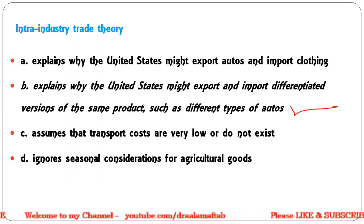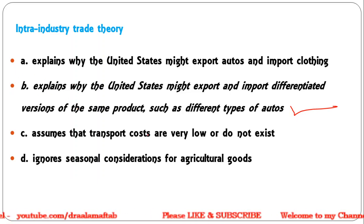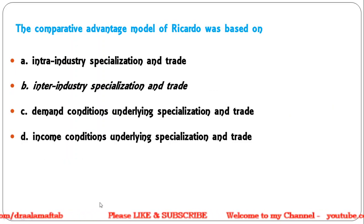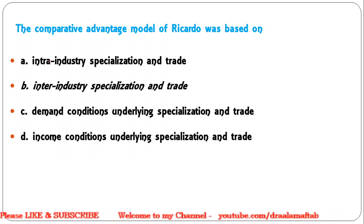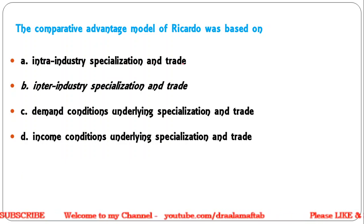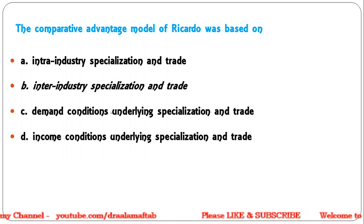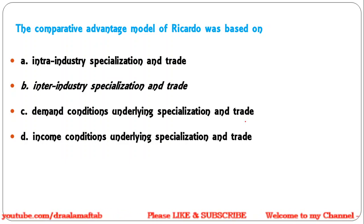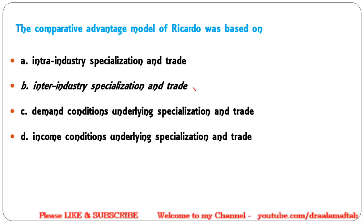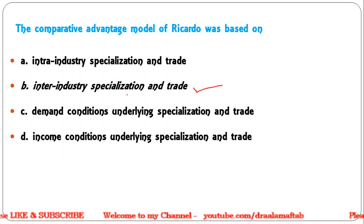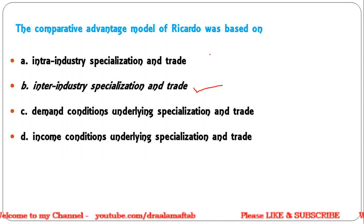Next: The comparative advantage model of Ricardo was based on — intra-industry specialization and trade; inter-industry specialization and trade; demand conditions underlying specialization and trade; income conditions underlying specialization and trade. Correct answer: inter-industry specialization in the case of Ricardo's comparative advantage model.